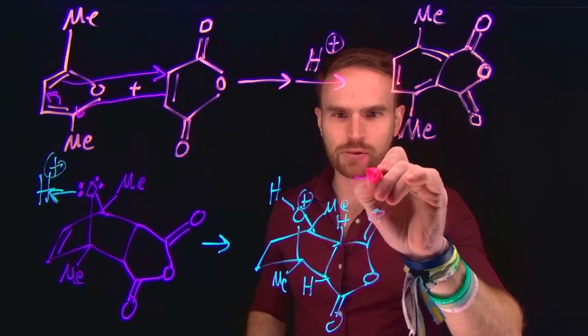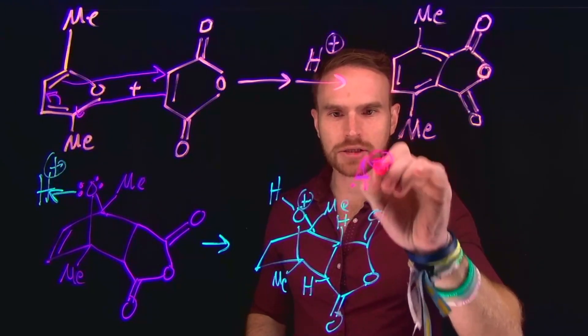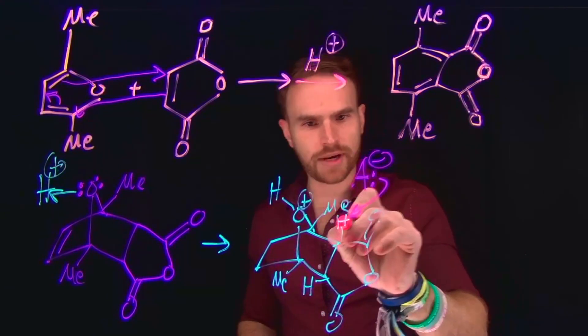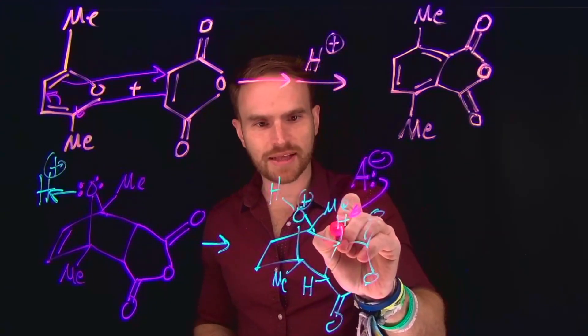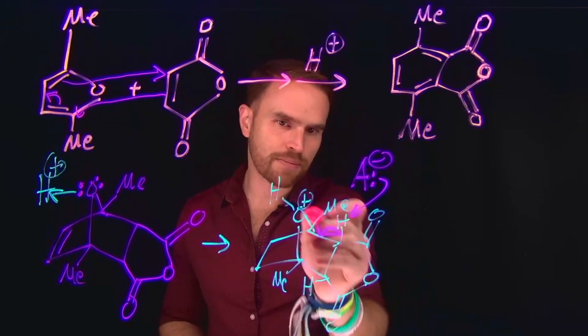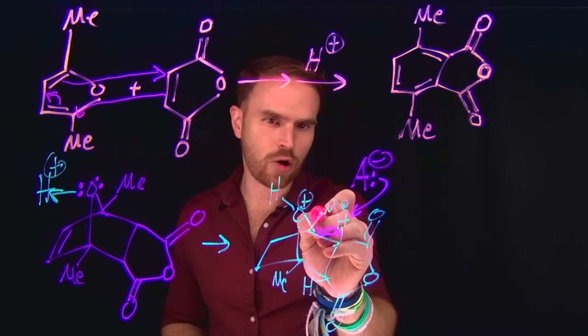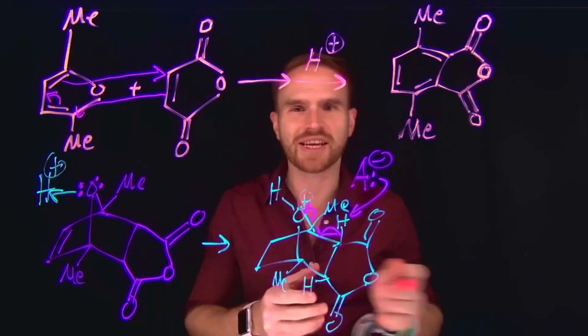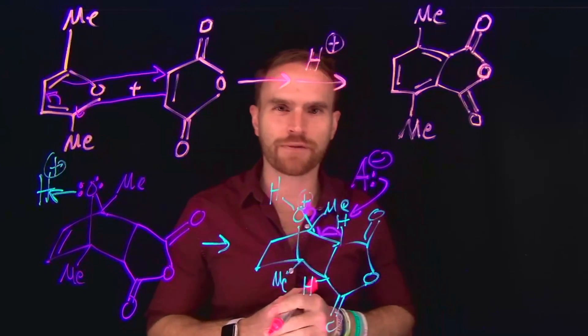And the deprotonation of those hydrogens will actually result in the formation of a new pi bond, so the deprotonation of this proton will bring these electrons down and form a new pi bond, which will actually serve to liberate this fused ring system and open this second ring since this was a positively charged oxygen in a kind of cascade of electron flow.